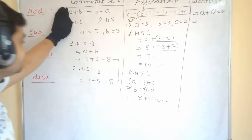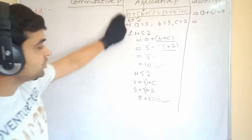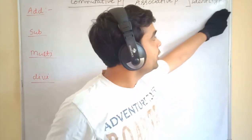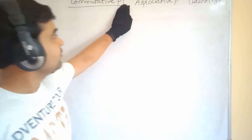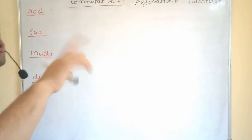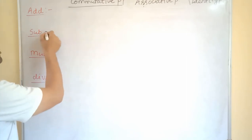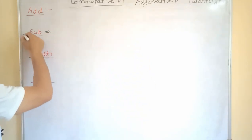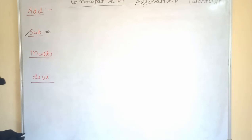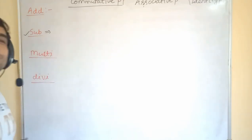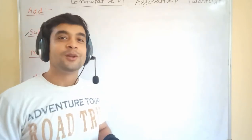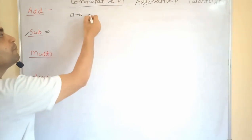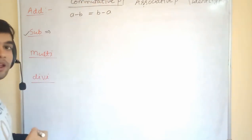Now we are going to see all the properties for subtraction, one by one. For commutative property in subtraction, we change the sequence and check whether they come out equal or not. So we check: if a − b = b − a. If they are not equal, it means subtraction is not following commutative property, but we have to verify through an example.